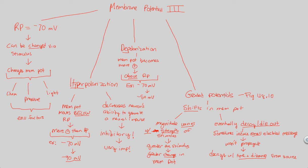In graded potentials, and especially in figure 48.10, we see both graded hyperpolarization events and graded depolarization events. The final concept to understand about membrane potential is the idea of threshold. Threshold is a number you must remember — most neurons have a threshold of negative 55 millivolts.